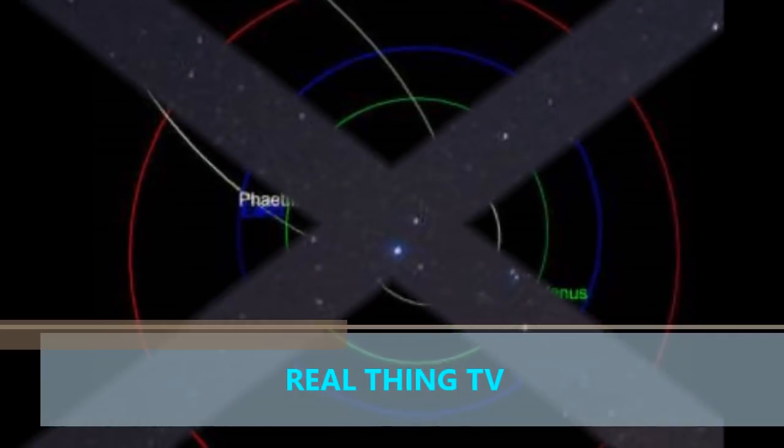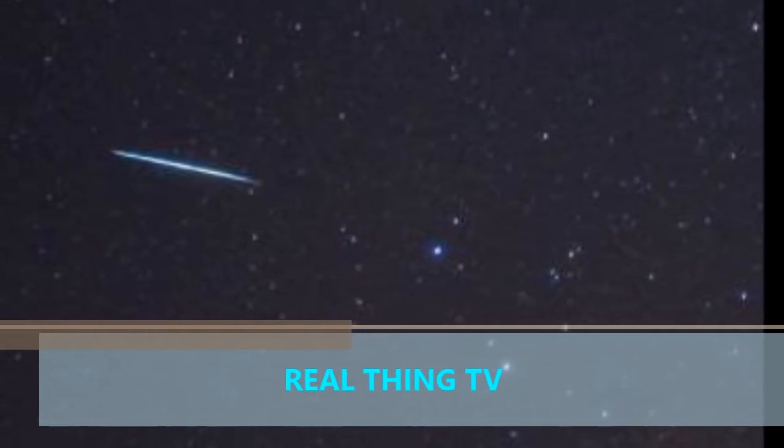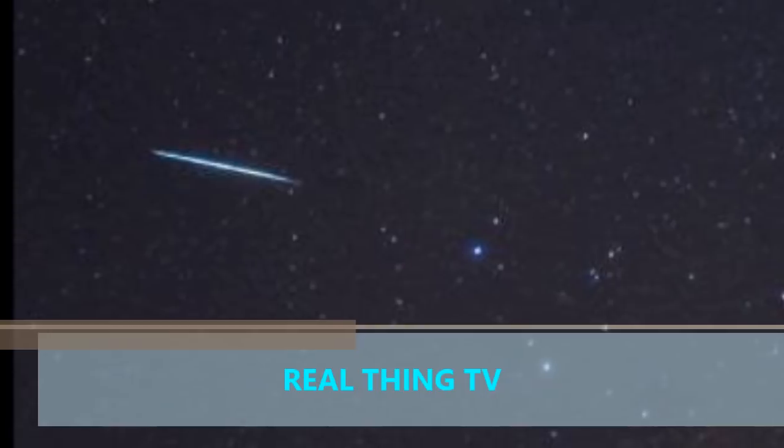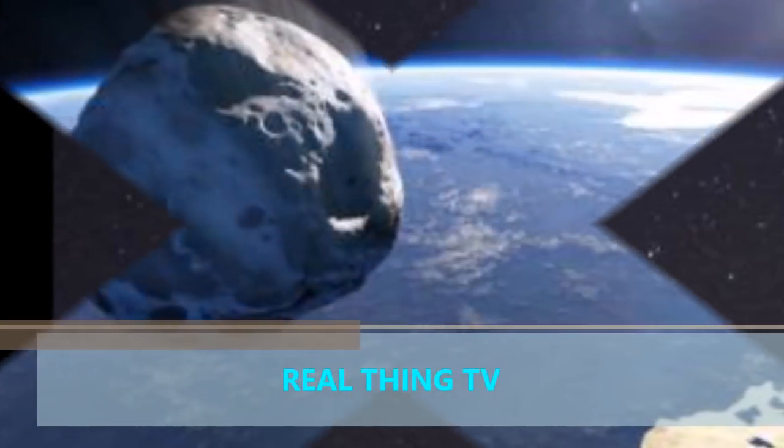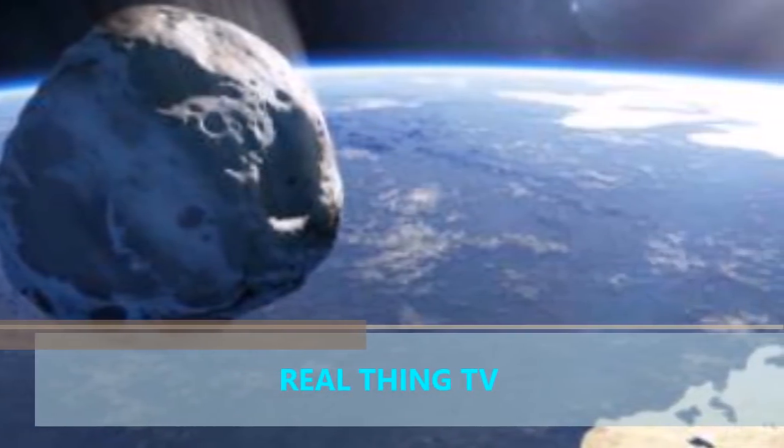Asteroid 3200 Phaethon was first discovered in 1983. A spokesman for NASA said, with a diameter of about 5 kilometers, Phaethon is the third-largest near-Earth asteroid and is classified as potentially hazardous.